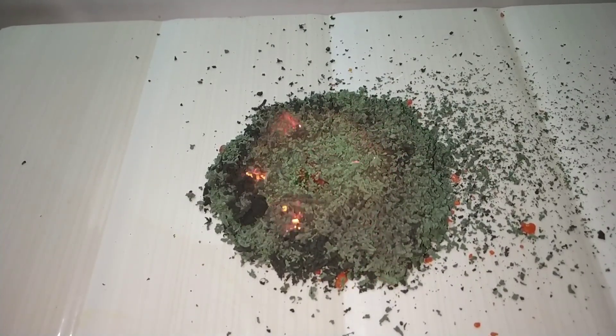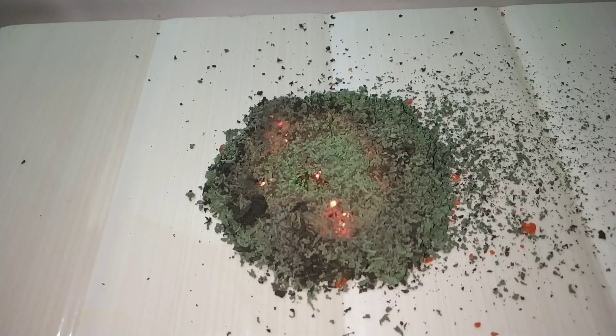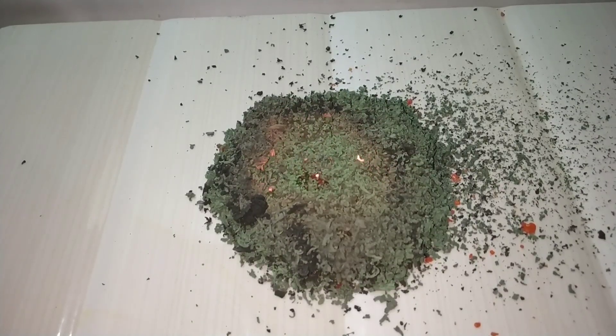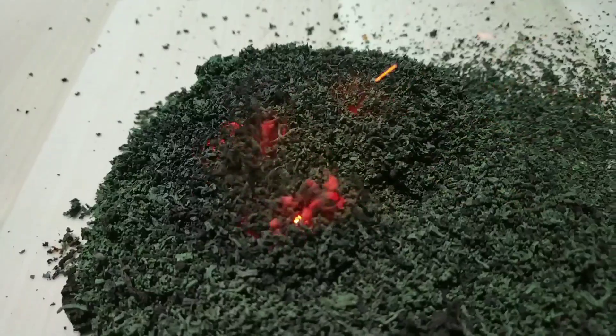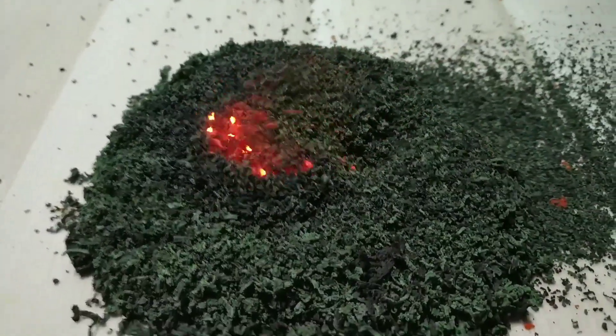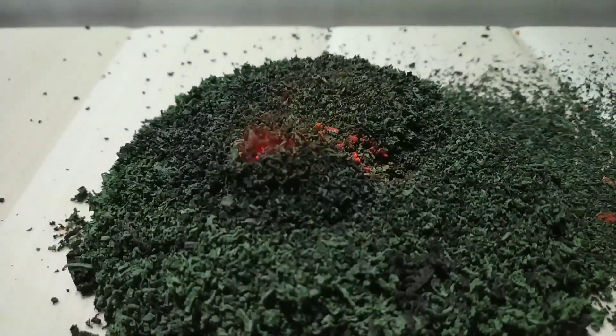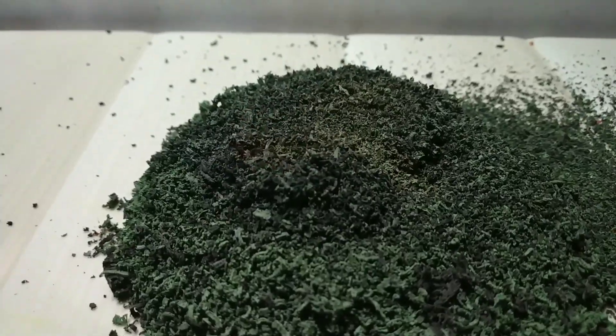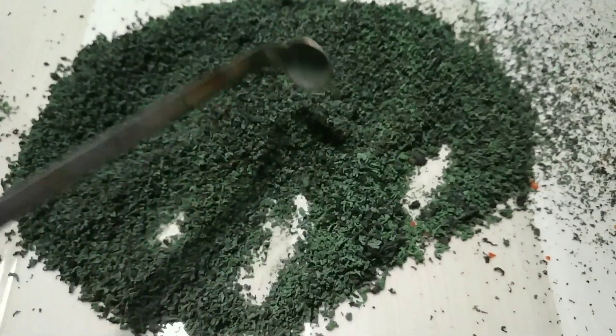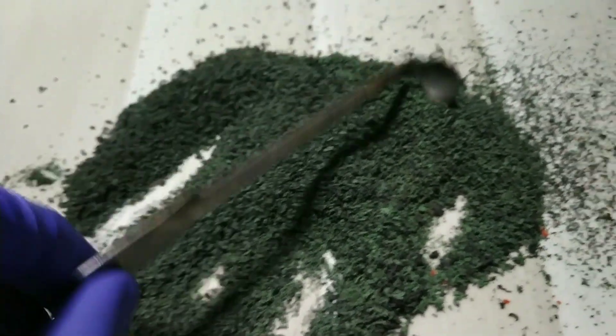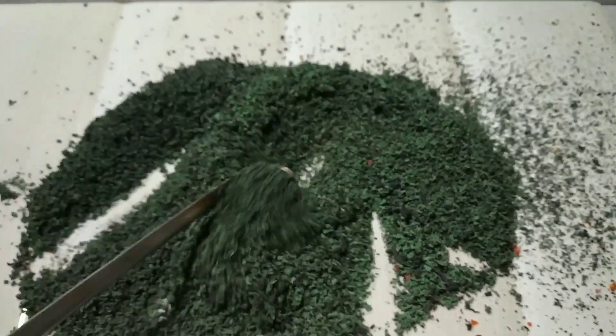In this process the hexavalent ammonium dichromate, that is chromium 6 plus, is actually getting reduced to chromium 3 plus. After the reaction is complete we are left with this green fluffy thing that is the chromium 3 oxide.